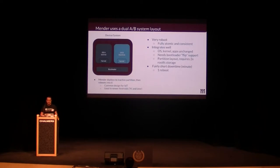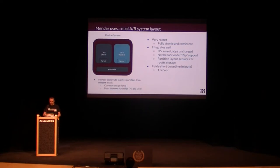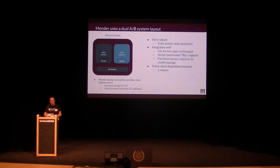From the beginning, Mender has focused on dual A/B system layout updates. To get robustness and the ability to roll back to a working state, you keep two copies of your operating system — OS-A and OS-B. OS-A is the currently active running system; OS-B is inactive and waiting. When you deploy an update, you update OS-B, reboot the device, and switch so OS-B becomes active. If it doesn't work, you can always go back to OS-A, because that's the known working state.